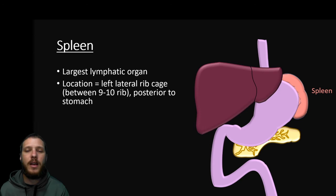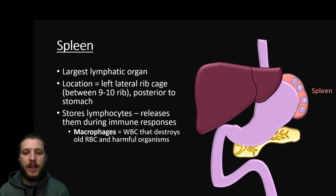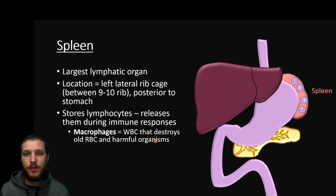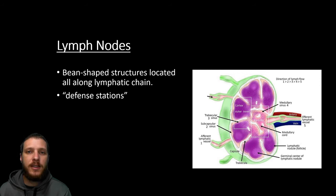The secondary lymphatic organs store lymphocytes — they don't produce cells but are populated by them. These include the spleen, lymph nodes, and mucosa-associated lymphoid tissues (MALT). The spleen is the largest lymphatic organ, located on the left lateral rib cage between ribs 9 and 10, just posterior to the stomach. It stores lymphocytes and releases them during an immune response. Macrophages — 'macro' meaning large, 'phage' meaning eater — are large white blood cells that destroy old red blood cells and harmful organisms, forming part of the immune system's first response. The spleen can also act as a blood reservoir, releasing extra blood into circulation during blood loss.